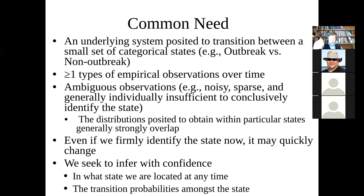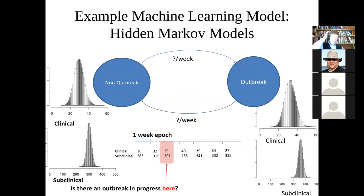We seek to infer with confidence: first and foremost, what state we are in at any one time, and secondarily, the transition probabilities among states. Consider a situation where we're in either an outbreak or non-outbreak state. In an outbreak state for foodborne illness, we expect more clinical cases — people requiring physician care — than in a non-outbreak state.